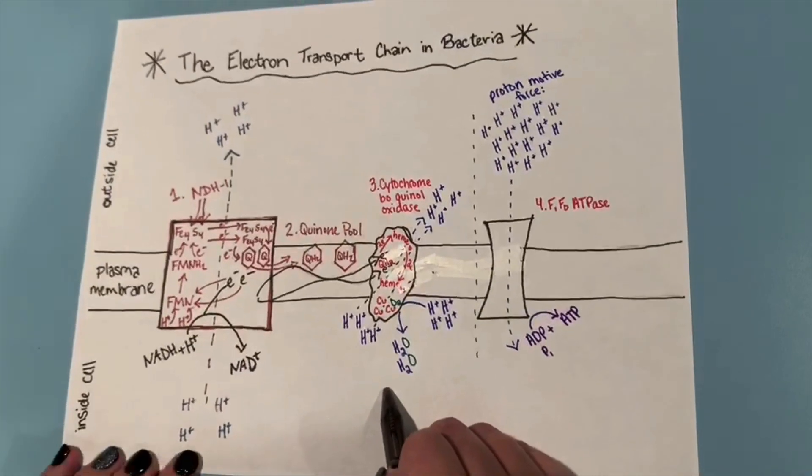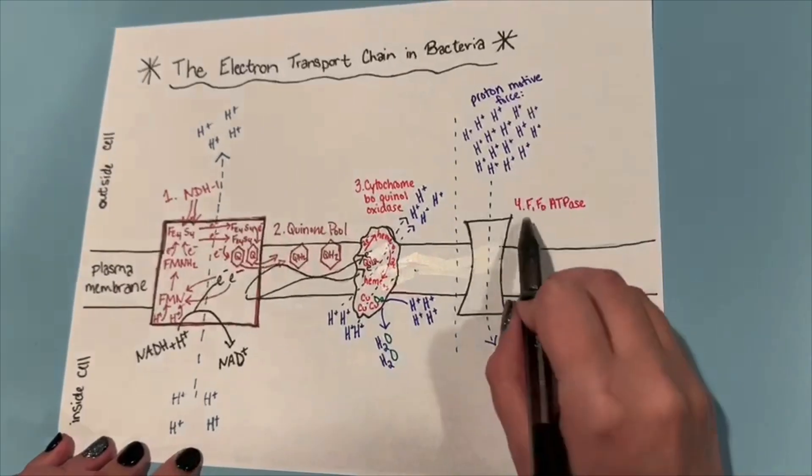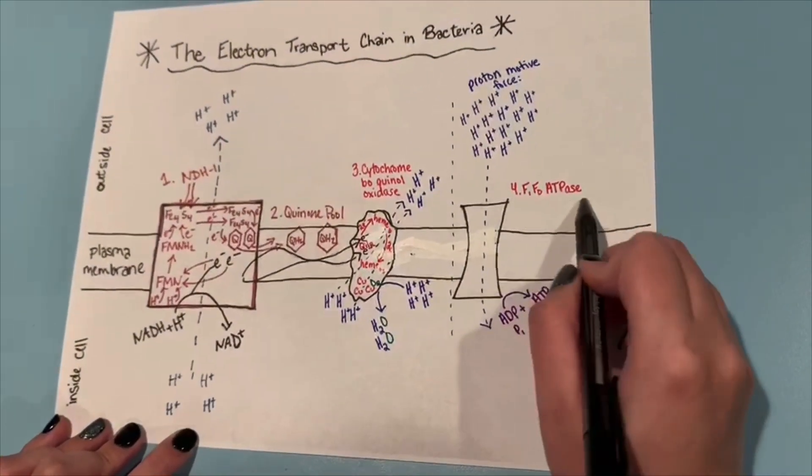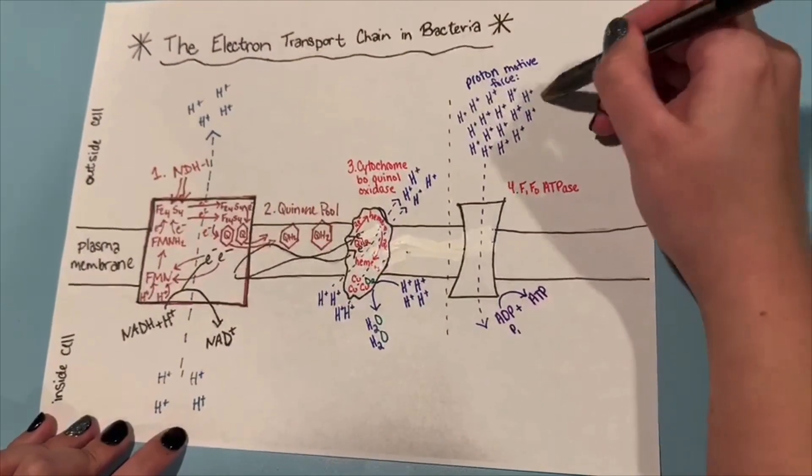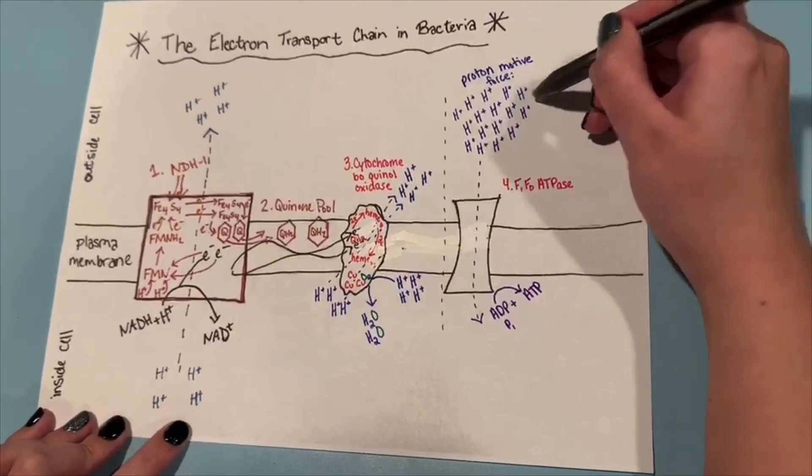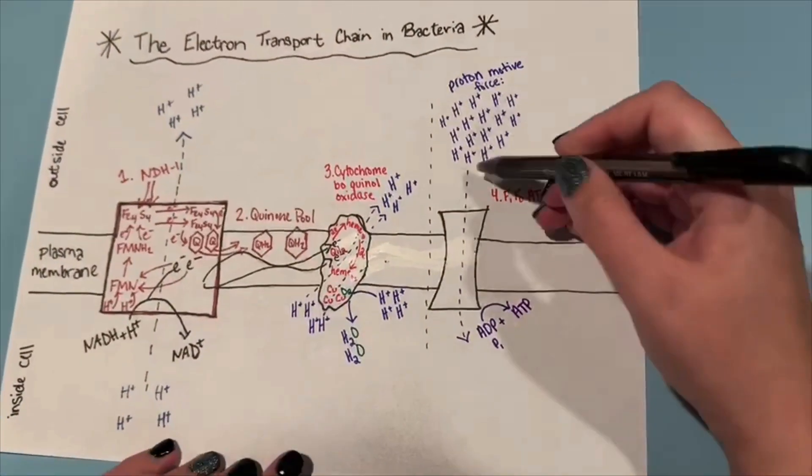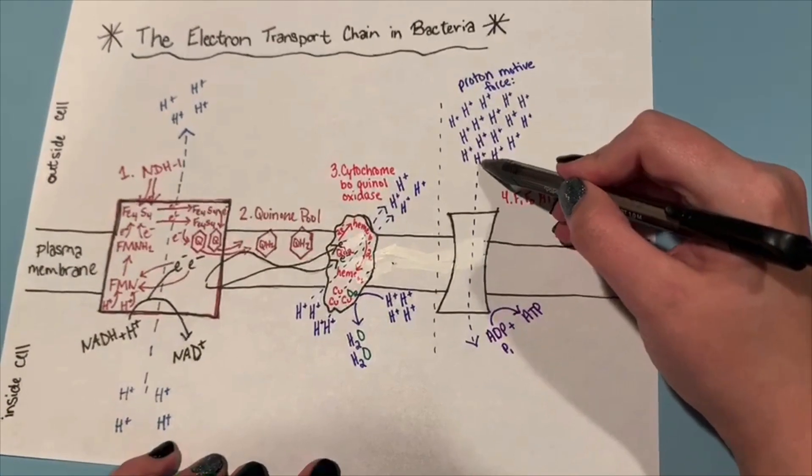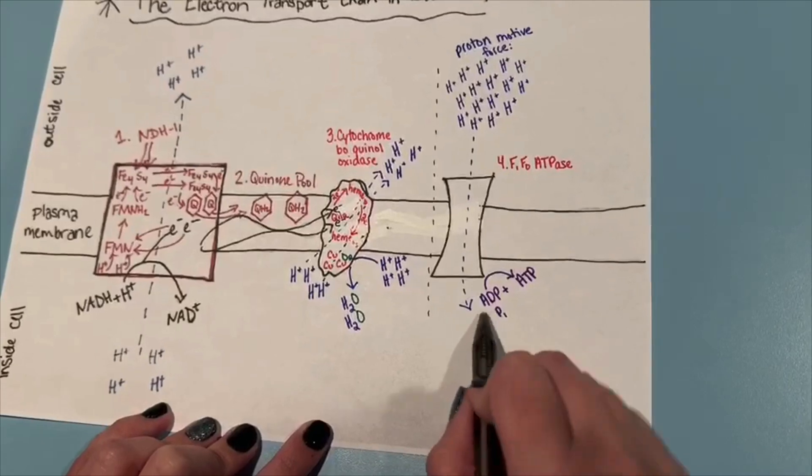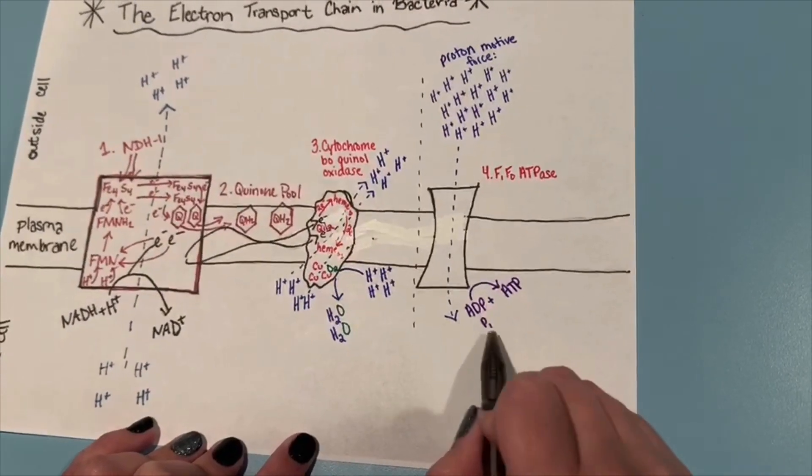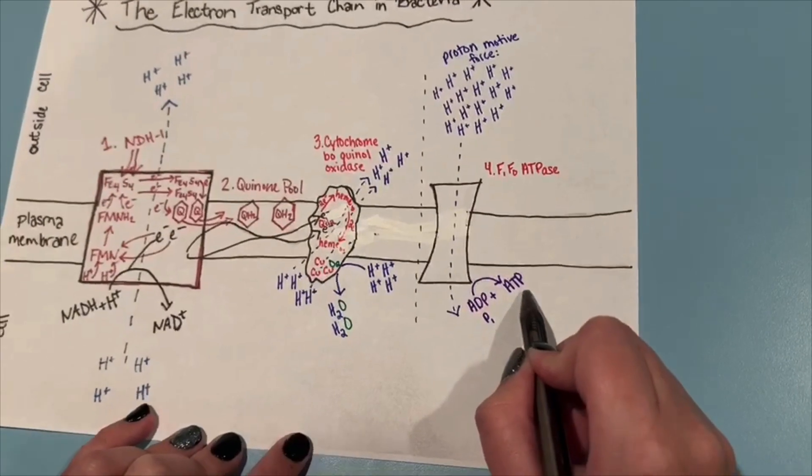So now over here we have ATP synthesis, which is done by F1 F0 ATPase in bacteria. This process is fueled by the proton motive force. So for this demonstration, I have gone ahead and drawn the 16 hydrogen ions from before. Every time one hydrogen ion is pumped through the ATP synthase, that fuels the phosphorylation of ADP and an inorganic phosphate to ATP, resulting in energy for the bacteria to use.